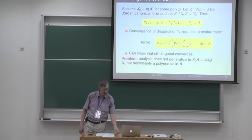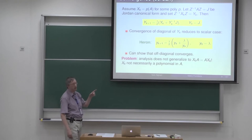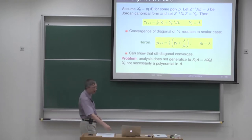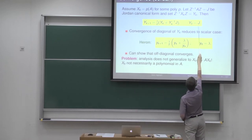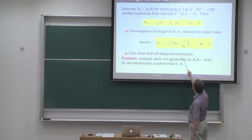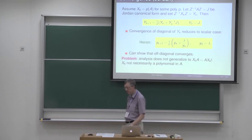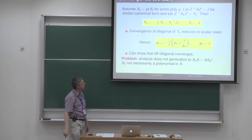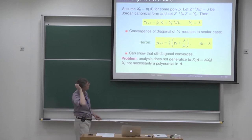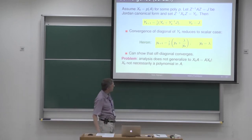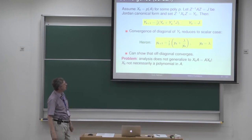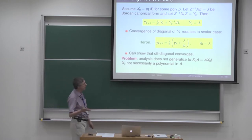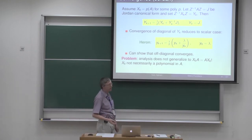This is now a bit easier to analyse. In particular, if you look at the diagonal of this triangular matrix, the diagonal elements are just satisfying this recurrence. We start off with an eigenvalue that comes from the diagonal of J, and it gets iterated according to this formula. And this is Heron's iteration for the square root of a scalar — the square root of lambda. We know that this converges to a square root of lambda. So the convergence of the eigenvalues is immediate from classical results.